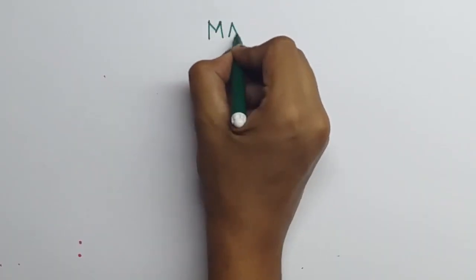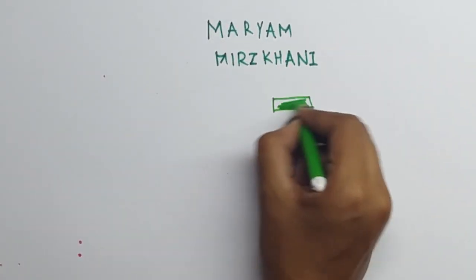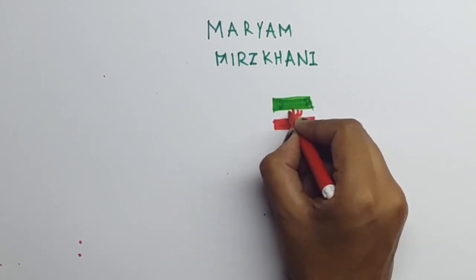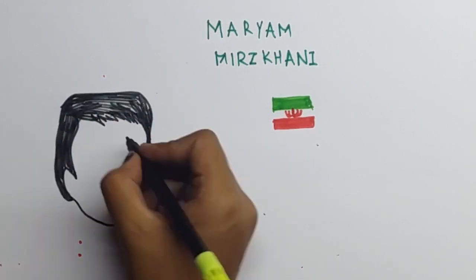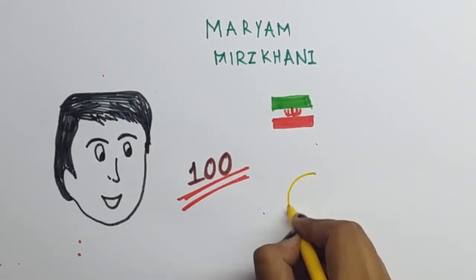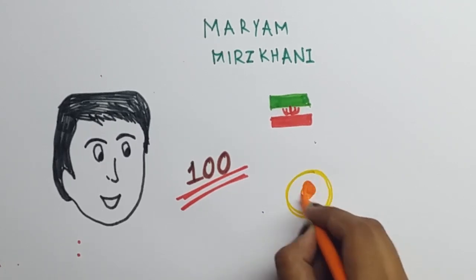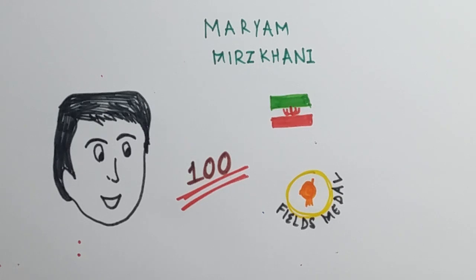Another inspiration to women all around the world is Maryam Mirzakhani, an Iranian mathematician and professor of mathematics at the Stanford University. Maryam was the first Iranian student to achieve a perfect score in maths. She also became the first female recipient of the Fields Medal, which is the equivalent for a Nobel Prize in mathematics.